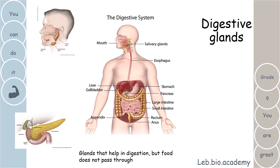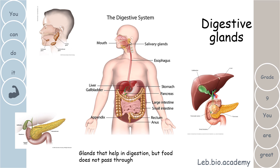The second gland is the pancreas — this pancreas looks like a leaf. The pancreas will also secrete something to help in the digestion of food, but the food will not pass inside the pancreas. The food will keep passing inside the small intestine but will not go inside the pancreas. Finally, the last gland is the liver — this huge organ in our body. It also helps in the digestion of food, mainly fats, but food will not pass inside it.